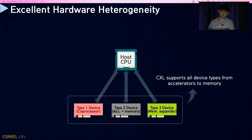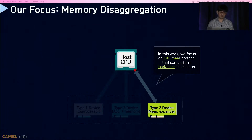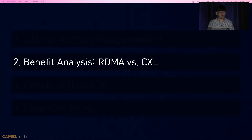CXL supports various types of devices ranging from accelerators to memory. In this work, we focus on the CXL.mem protocol with type 3 devices for memory expansion, which allows the host to access memory with load/store instructions. Now I'll discuss the benefits of CXL-based memory disaggregation compared to RDMA from both hardware and software viewpoints.